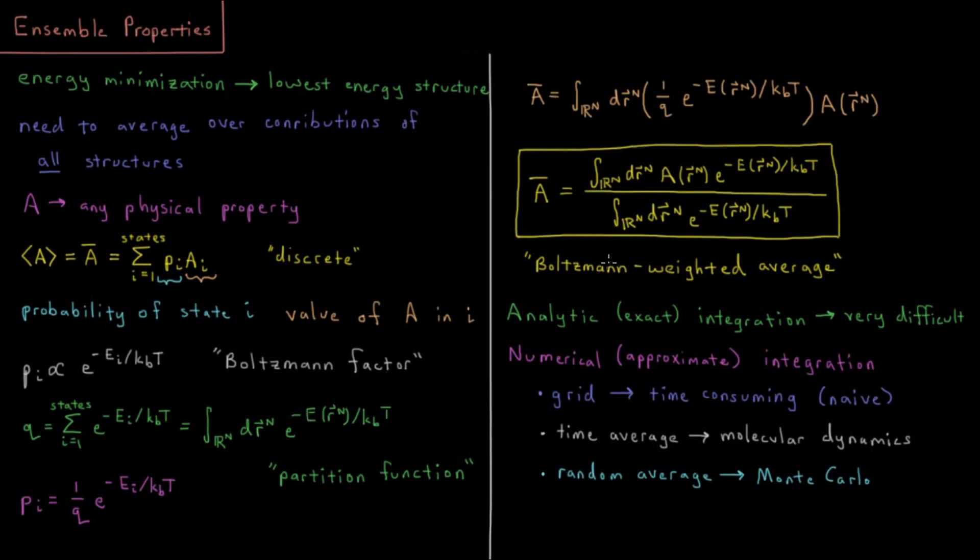So overall, what we get is called a Boltzmann weighted average of this property A, whether that's energy or any other kind of physical property. We have an integral in our numerator, which is the integral of the property value times Boltzmann factor, and an integral in the denominator which normalizes that, which is the integral of all of our Boltzmann factors or our partition function.